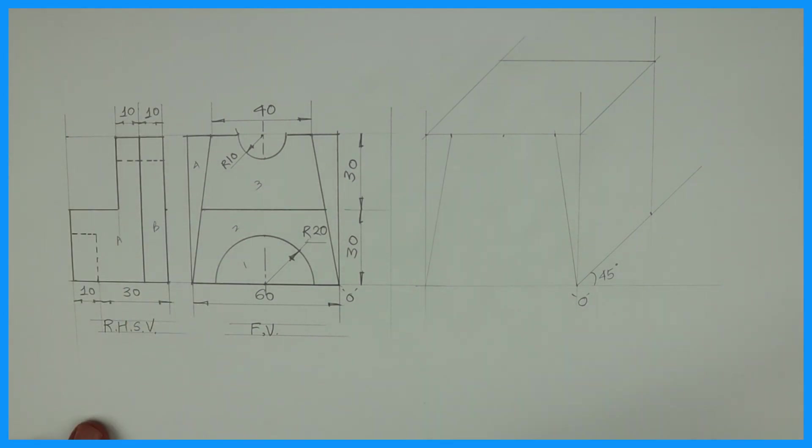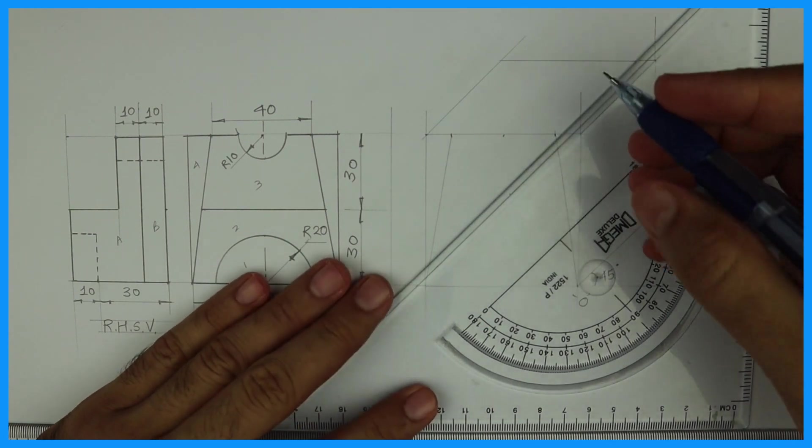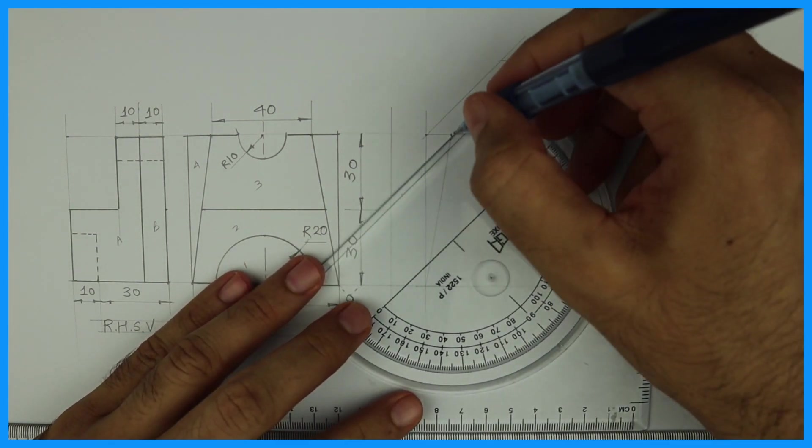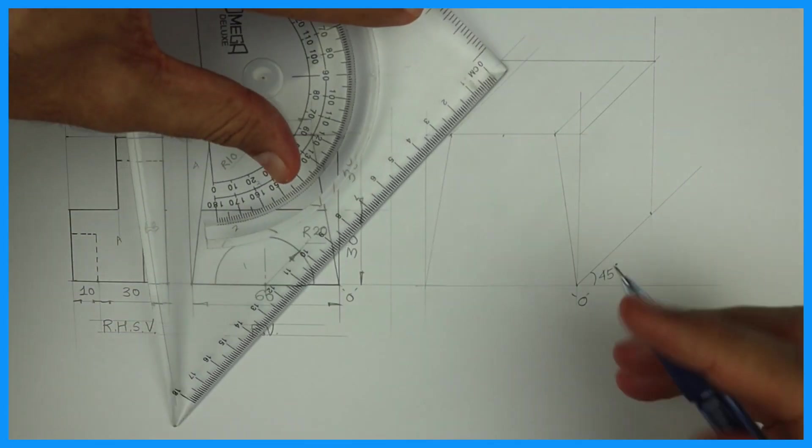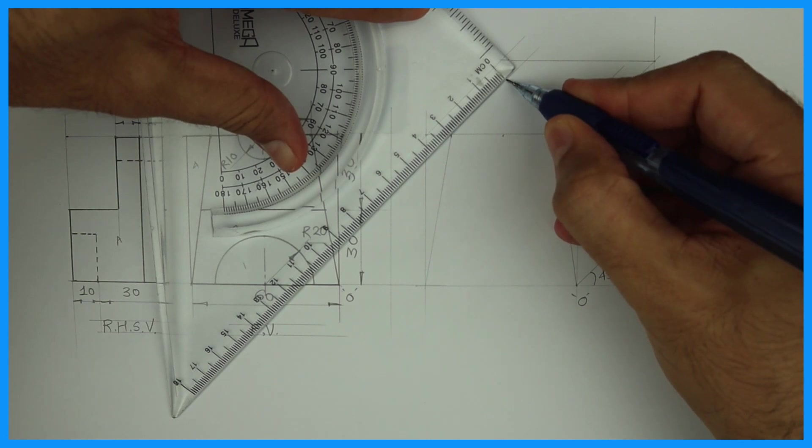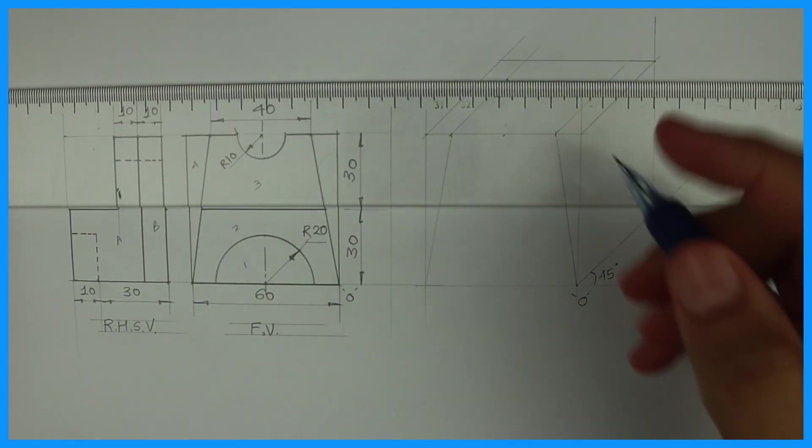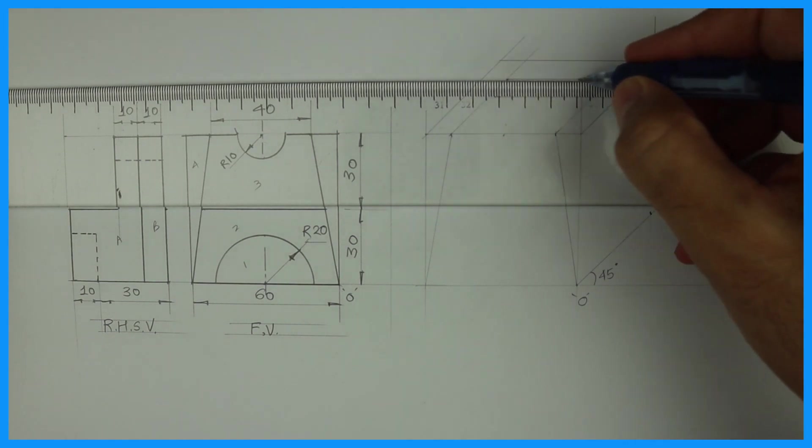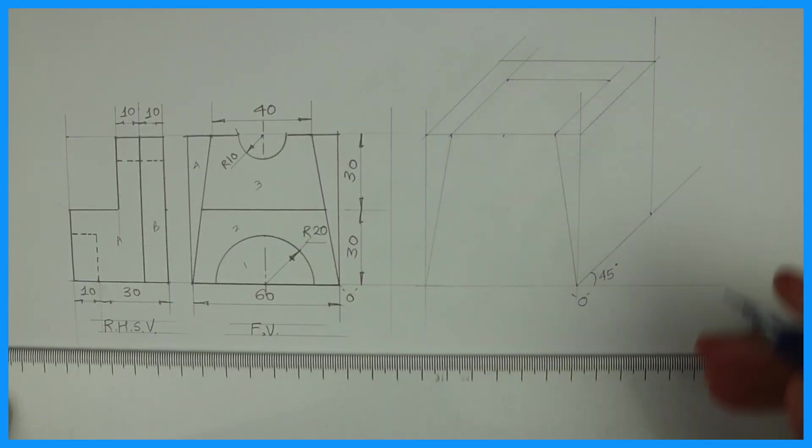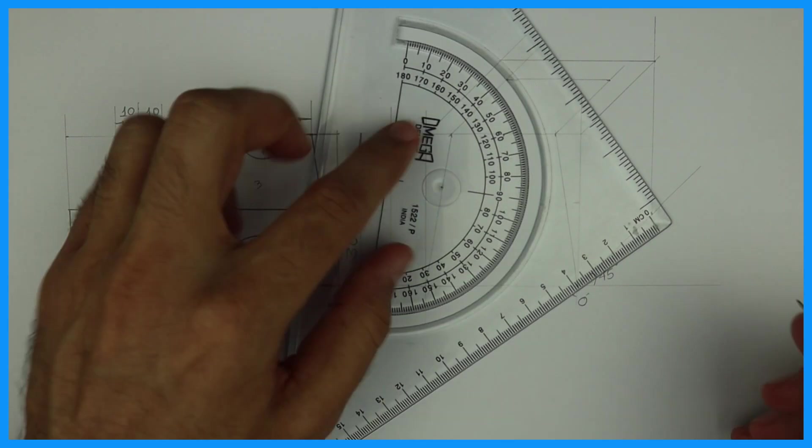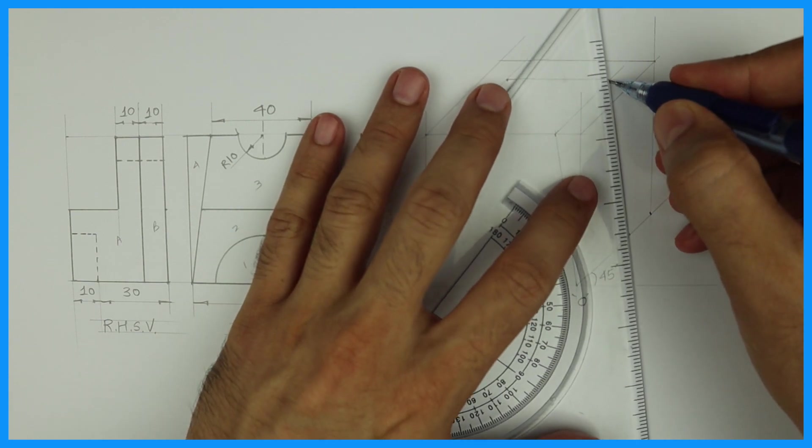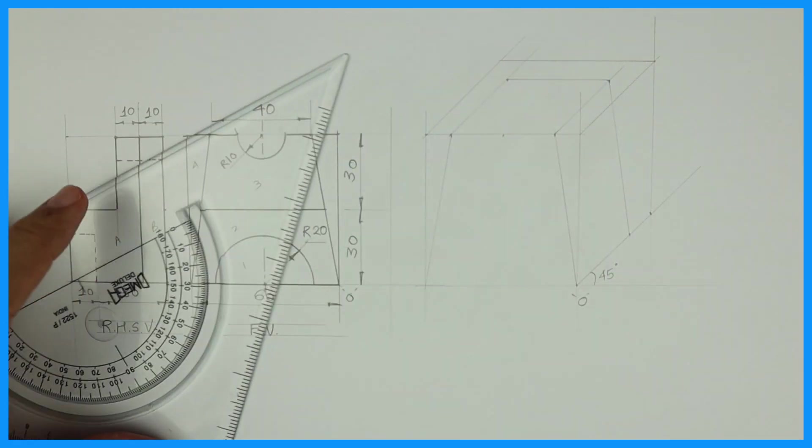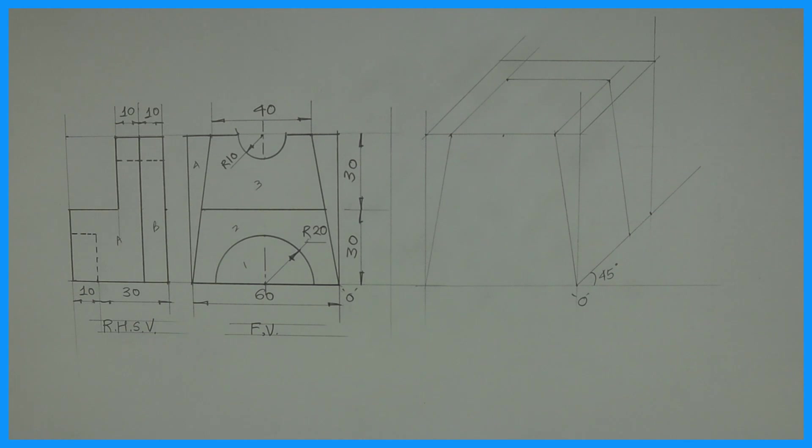How much is this? 30. 40 minus 10 is 30. So you take all these points behind by 30. So you can see. So, we are done with this slope.